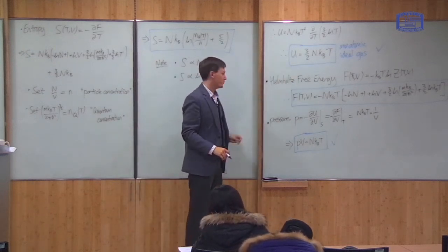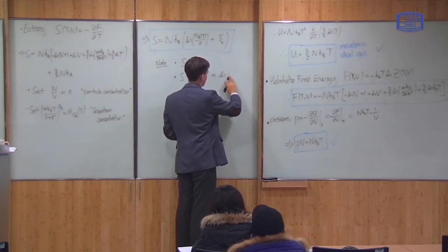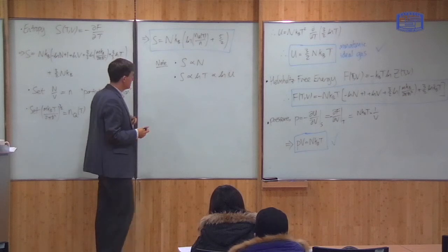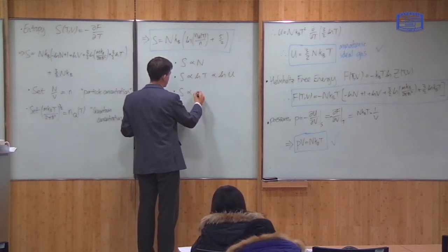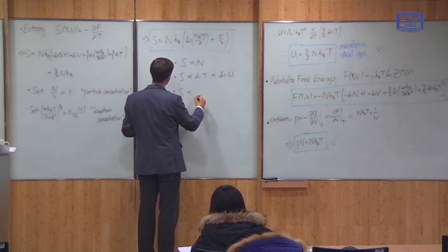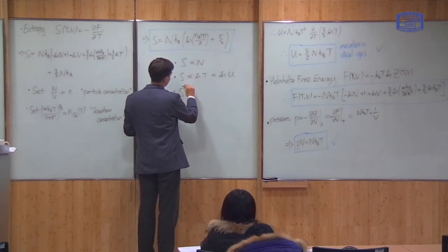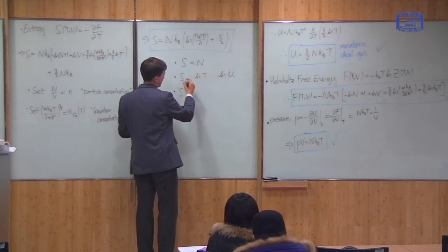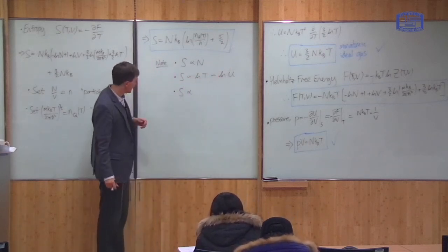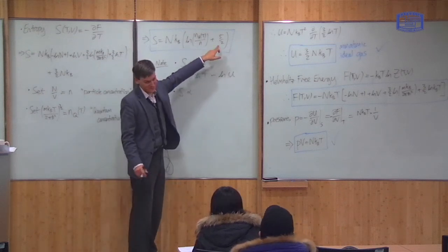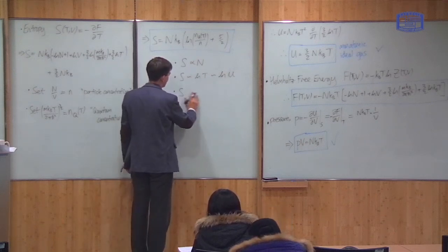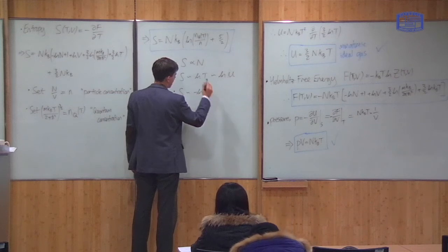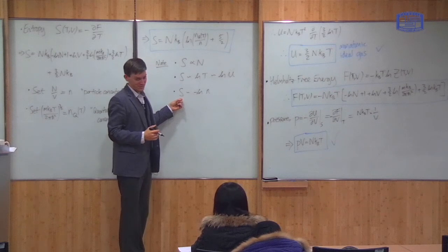Some interesting things about the entropy: it is always proportional to the number of particles, N. Its temperature dependence enters through nQ(T), so S grows like ln T, which also means it's proportional to the log of the internal energy U. Additionally, S goes like −ln n, so increasing the density — that is, compressing the gas — decreases the entropy.